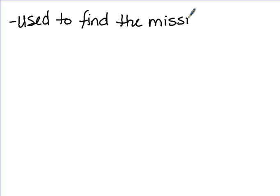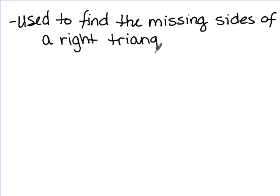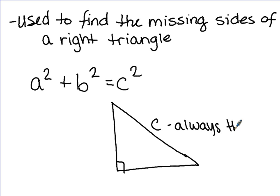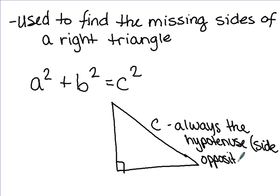It only works with right triangles. It's used to find the missing side of a right triangle. Here's the formula: a squared plus b squared equals c squared. And on our right triangle, the c side is always the hypotenuse. The hypotenuse is the side opposite the right angle.